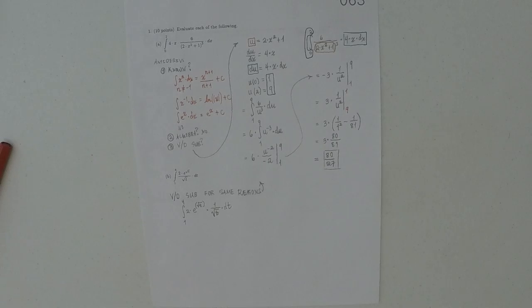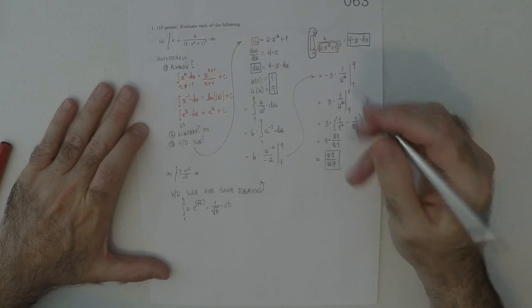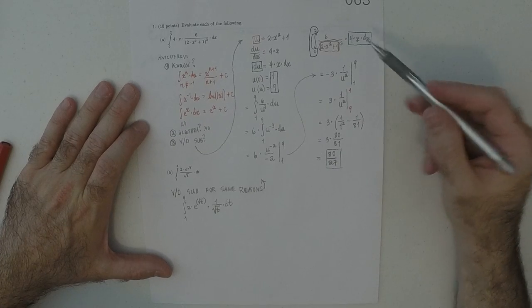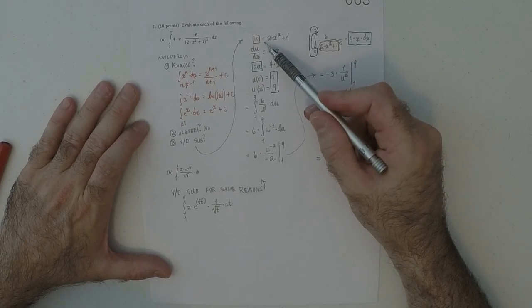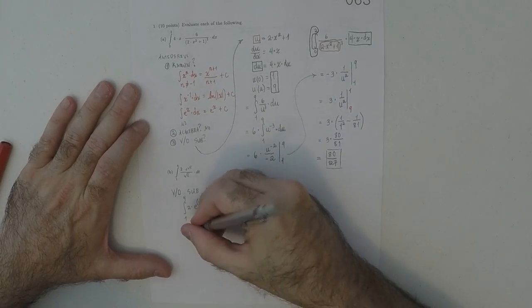So, now I'm going to do a substitution. And because I already used the letter u up there, I'll use some different letter. I'll use, how about, a w.